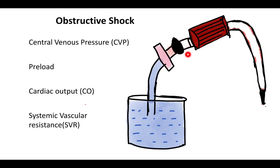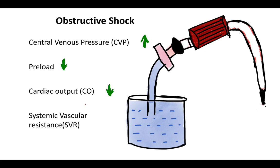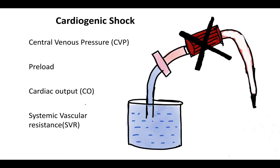In obstructive shock — caused by cardiac tamponade, pulmonary thromboembolism, or tension pneumothorax — the left atrium and left ventricle fail to fill due to internal or external obstruction. Blood pools before the obstruction, so CVP is high. No blood reaches the heart, so preload is low. Cardiac output is low, and SVR is high due to sympathetic stimulation.